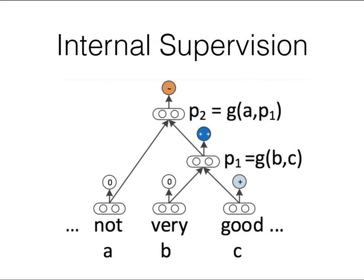This lets you provide internal supervision on recursive neural networks. When computing hidden vector representations at each node, you can run a classifier to predict whether that node's subtree is positive or negative. This is useful because every node can be asked: do you think everything under you is positive or negative? On one hand you can interpret what the tree is doing; on the other hand you get extra supervisory signal, which is nice.